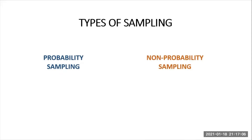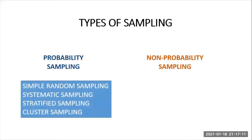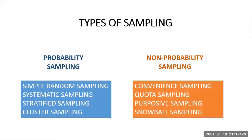Now there are several different sampling techniques available, and they can be subdivided into two groups: probability sampling and non-probability sampling. Probability sampling techniques include simple random sampling, systematic sampling, stratified sampling, and cluster sampling. For non-probability sampling, the techniques include convenience sampling, quota sampling, purposive sampling, and snowball sampling.